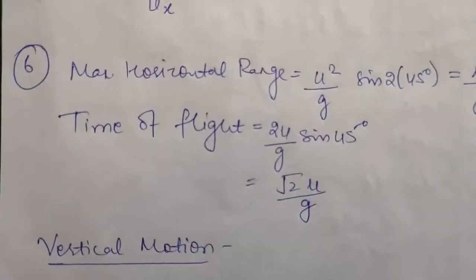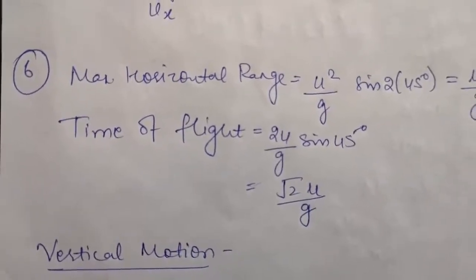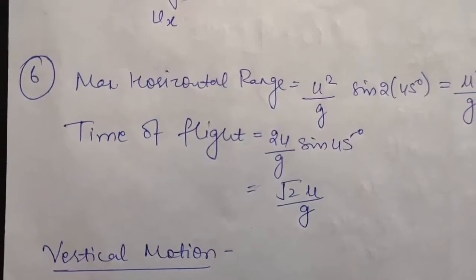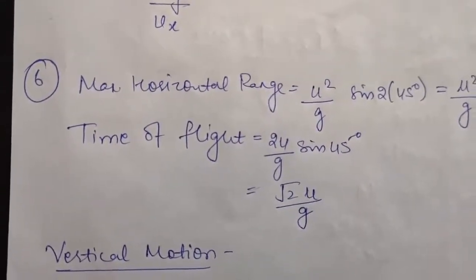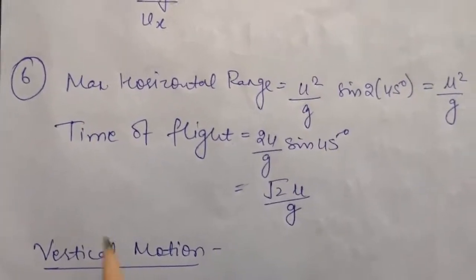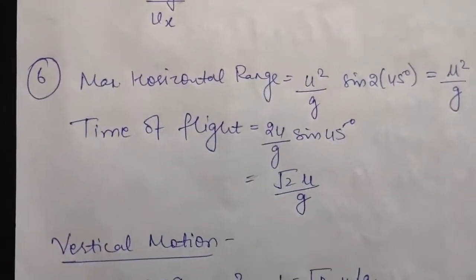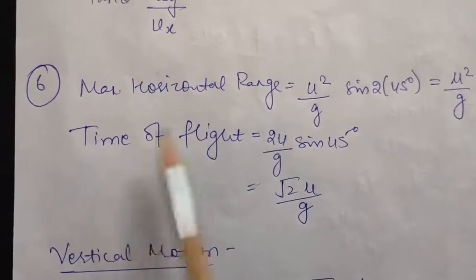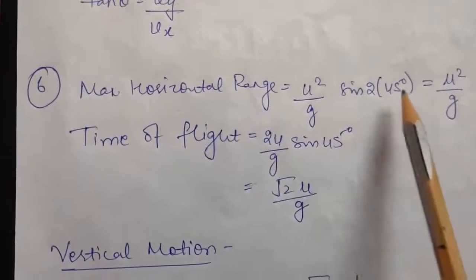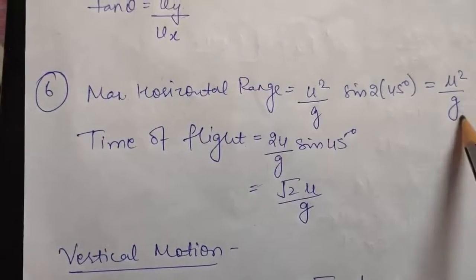Question number 6 says: show that the maximum range of a projectile in any direction is described in the same time in which it would fall freely under gravity through this distance starting from rest. For maximum horizontal range, the angle of projection should be 45 degrees. So maximum horizontal range equals u² upon g times sin(2 × 45), which is sin 90 = 1. Therefore maximum horizontal range = u²/g.